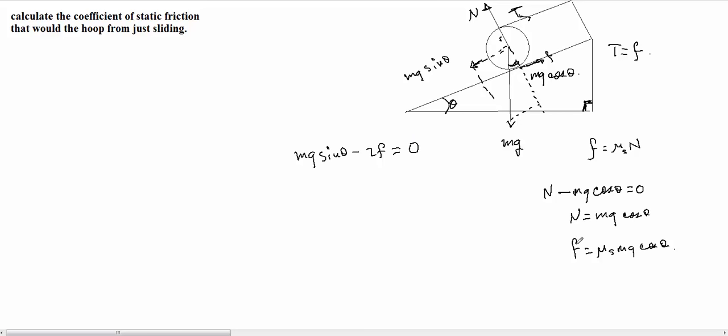However, now we have to substitute our frictional force into this equation here. So we're going to have mg sin theta minus twice the frictional force, which is all this over here. Coefficient of friction like this. Multiply that by mg cos theta equals zero.